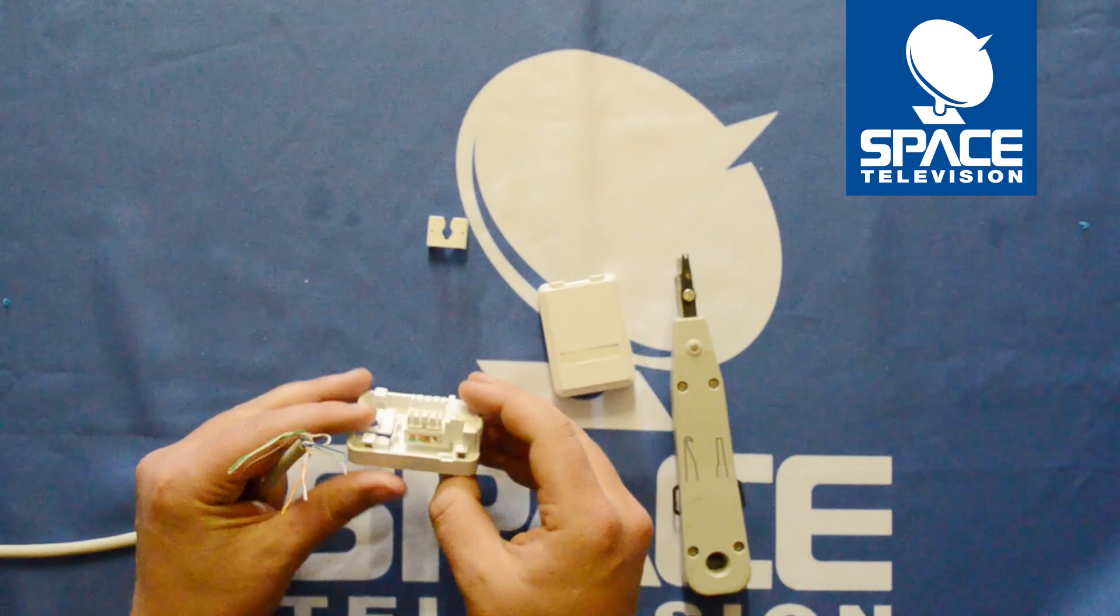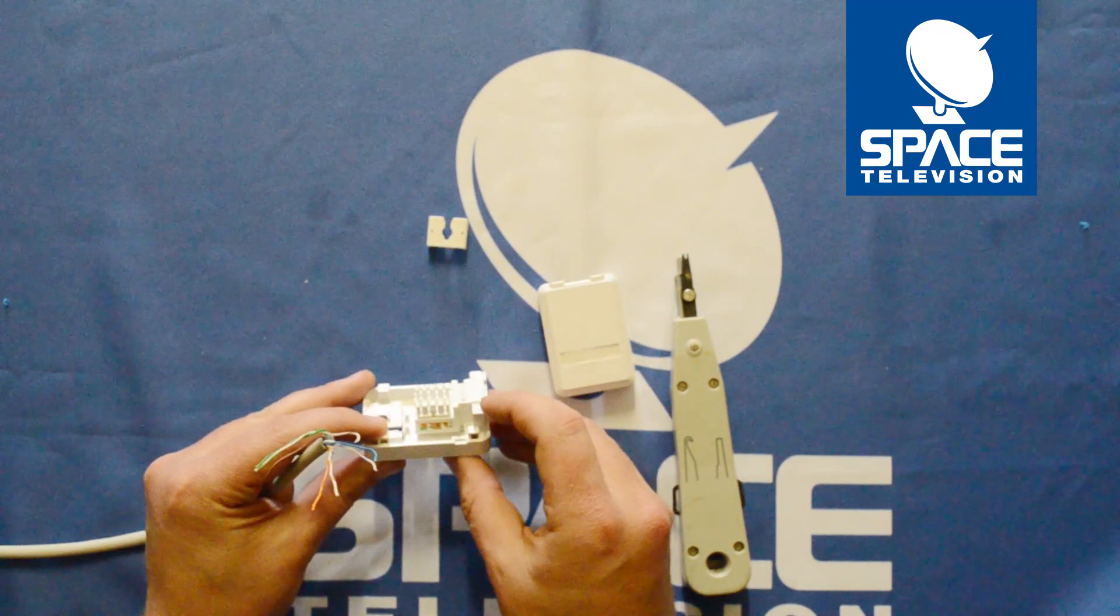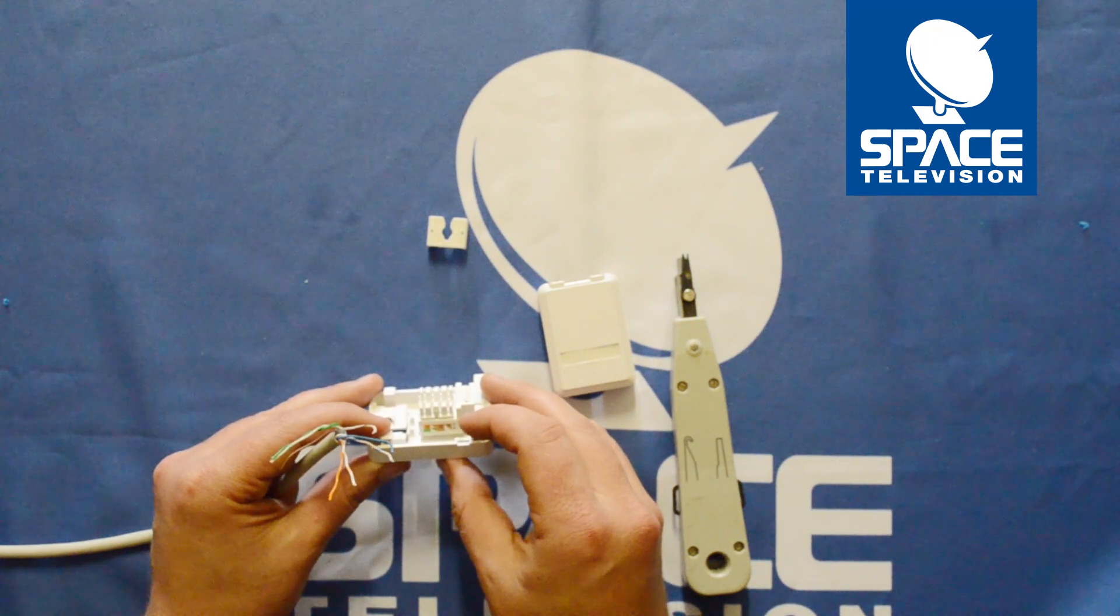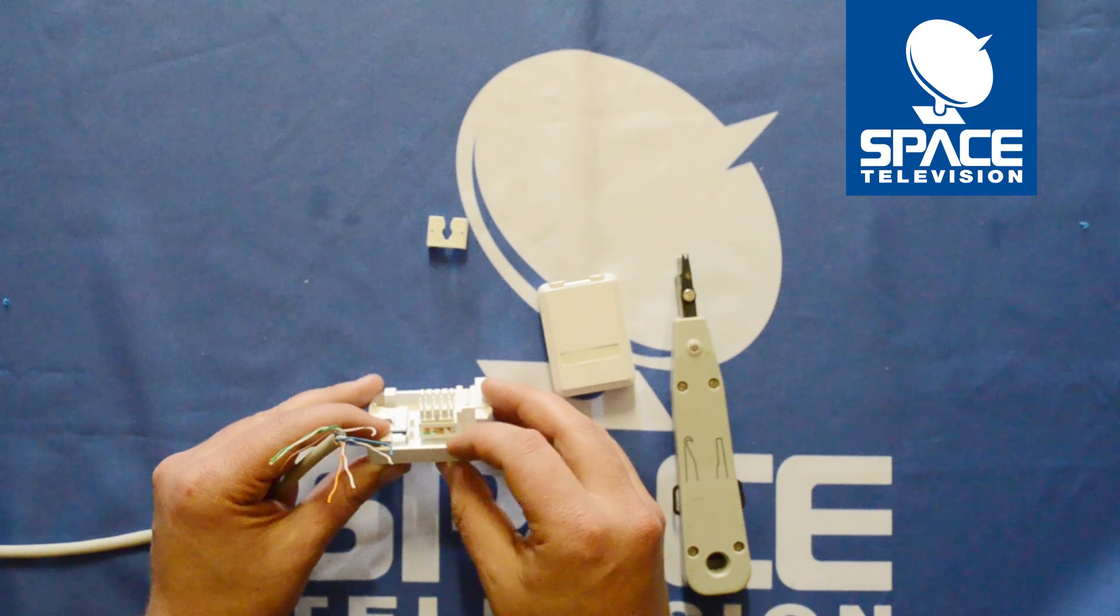So open up your termination box and if you have a look on the inside you can see it's A and B. So typically we would use type 568B.